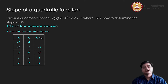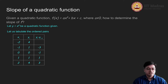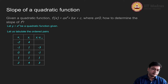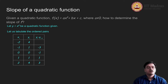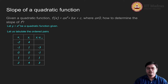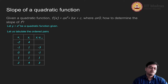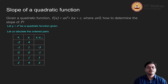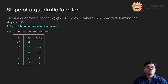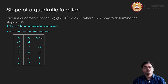Now, what is the definition of slope? It is change in y upon change in x. If you look at the left-hand side — the first column — the change in x is constant; it is 1 all the time.